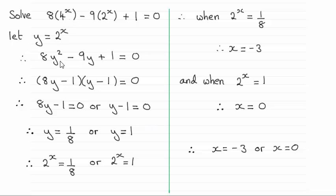So what this reduces down to is a quadratic equation in y, or 2 to the power x, just by substituting y in for each of these two terms. That gives us 8y squared minus 9y plus 1 equals 0.